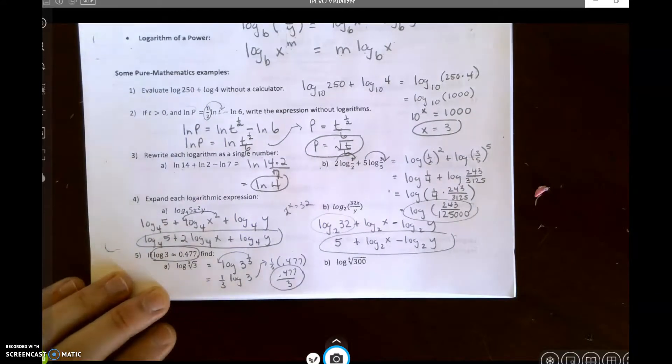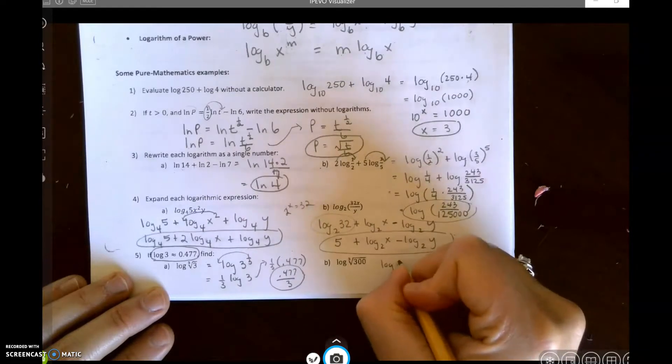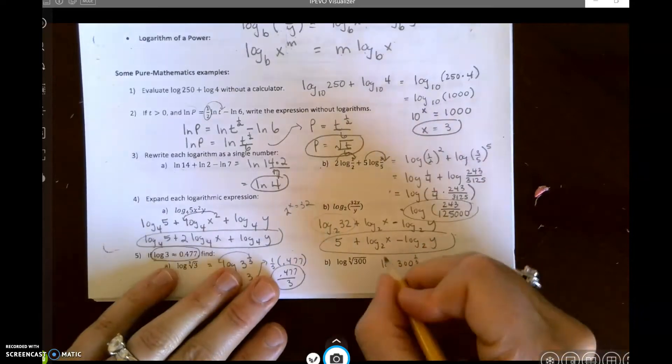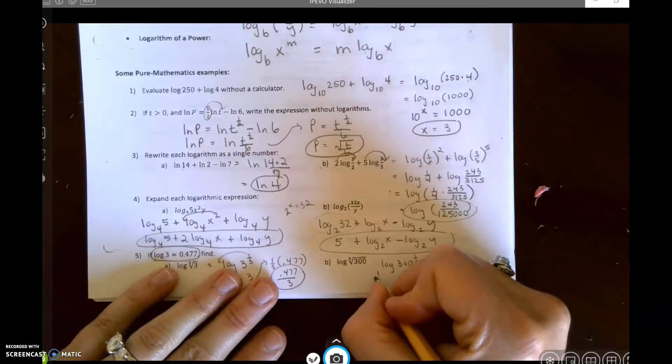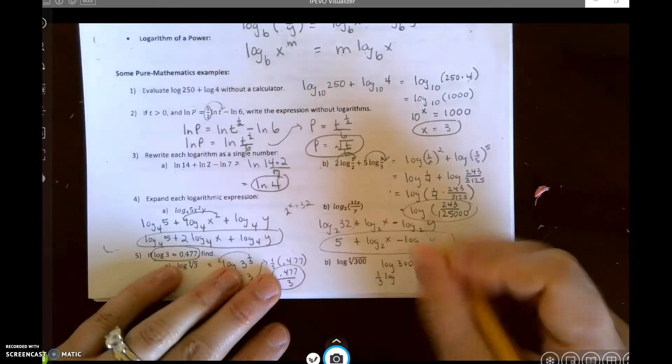All right, let's see if we can do this last one. This is going to be the log of 300 to the one-third, which is going to be one-third times the log of 3.